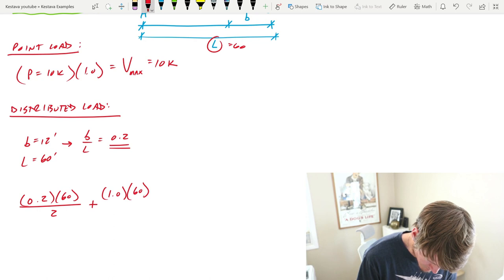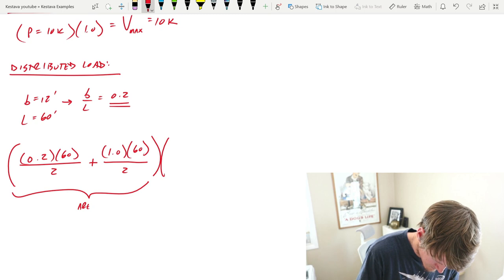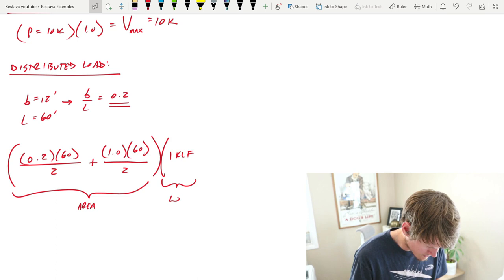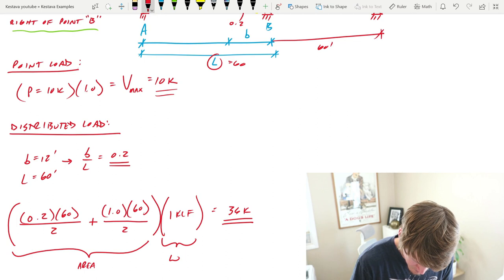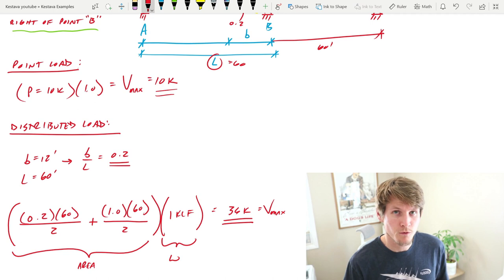We need to take all that area times the 1 klf - this is our w, our distributed load - equals 36 kips. So we have that and that, and again this is equal to V max for the distributed load and 10 kips V max for the point load.